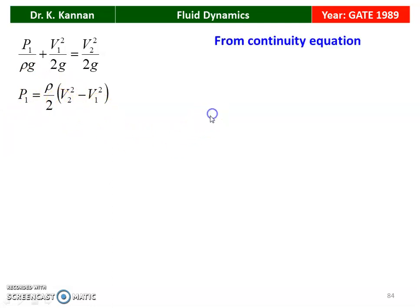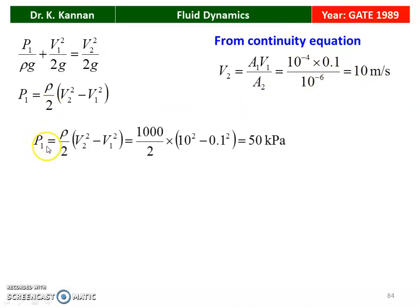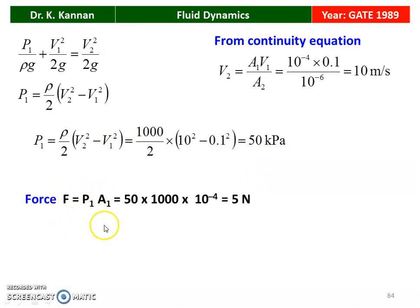V1 is given; V2 is calculated from the continuity equation: V2 = A1·V1/A2 = (10⁻⁴ × 0.1) / 10⁻⁶ = 10 m/s. Substituting: P1 = (1000/2)(10² − 0.1²) = 50 kPa. Force required: F = P1 × A1 = 50,000 × 10⁻⁴ = 5 Newton. So 5 N is the force required to push the piston to get the discharge.